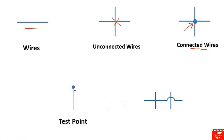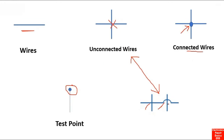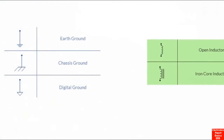Here we have a wire with a dot at its terminal — this represents a net point or connection point. This other symbol with no dot means unconnected wires; you can also find this style meaning unconnected wires. If you understand these basic electrical and electronic component symbols, you can read any schematic.